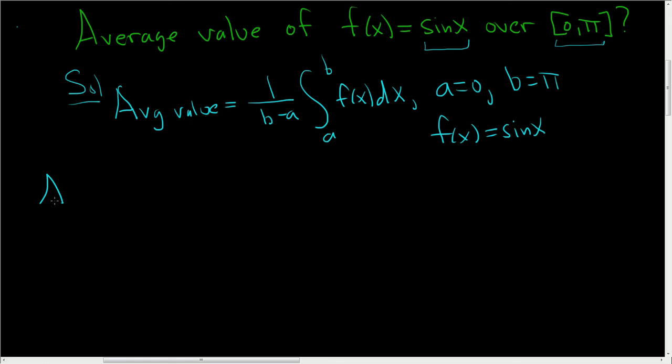So the average value is 1 over pi minus 0. Then we have the definite integral from 0 to pi of sine x with respect to x.